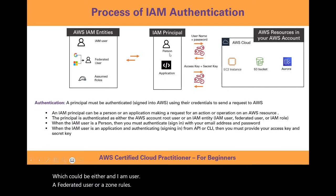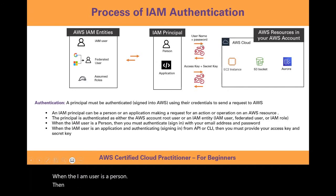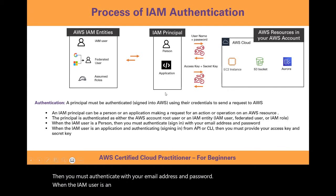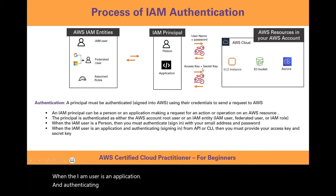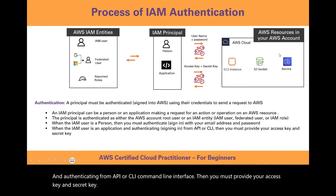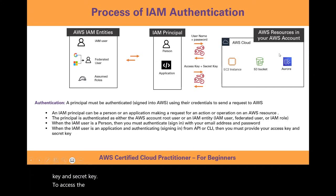When the IAM user is a person, then you must authenticate with your email address and password. When the IAM user is an application authenticating from API or CLI (command line interface), then you must provide your access key and secret key to access the AWS resources in your AWS account.